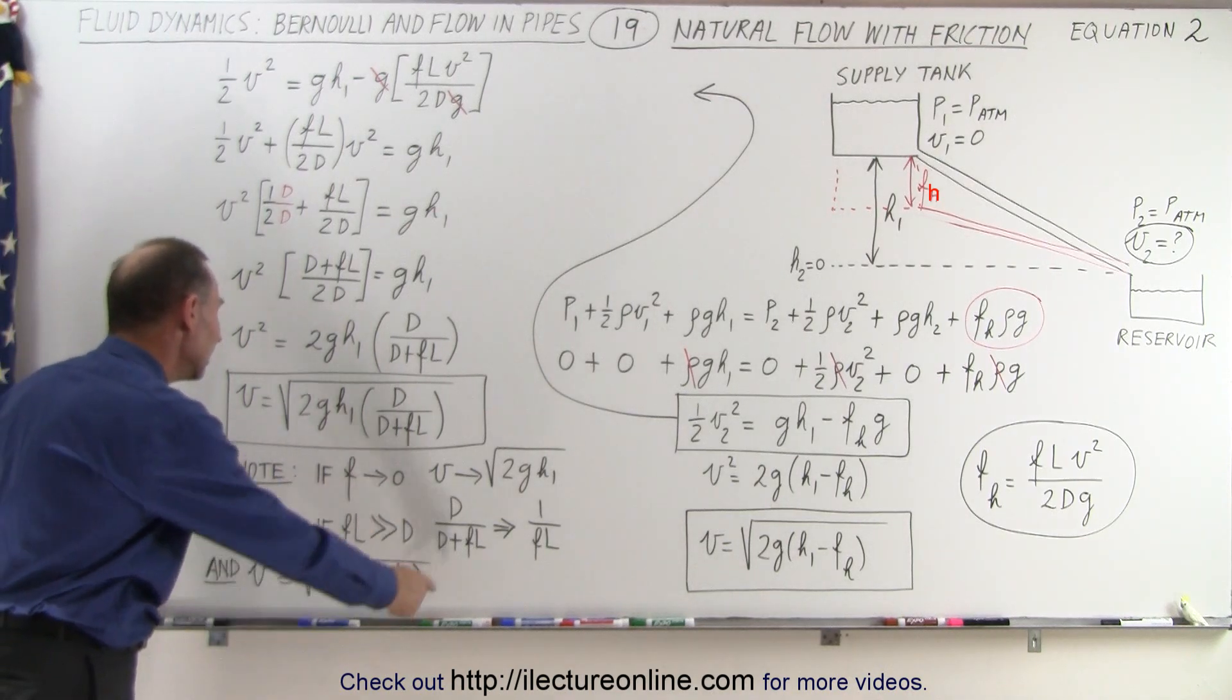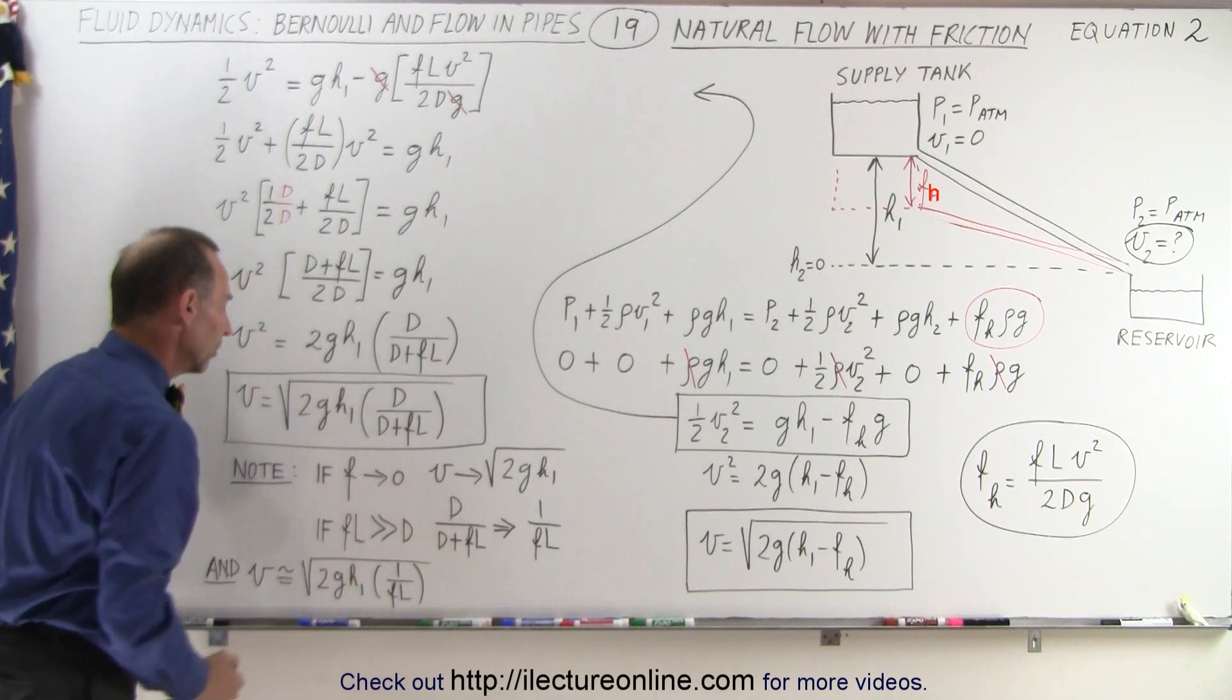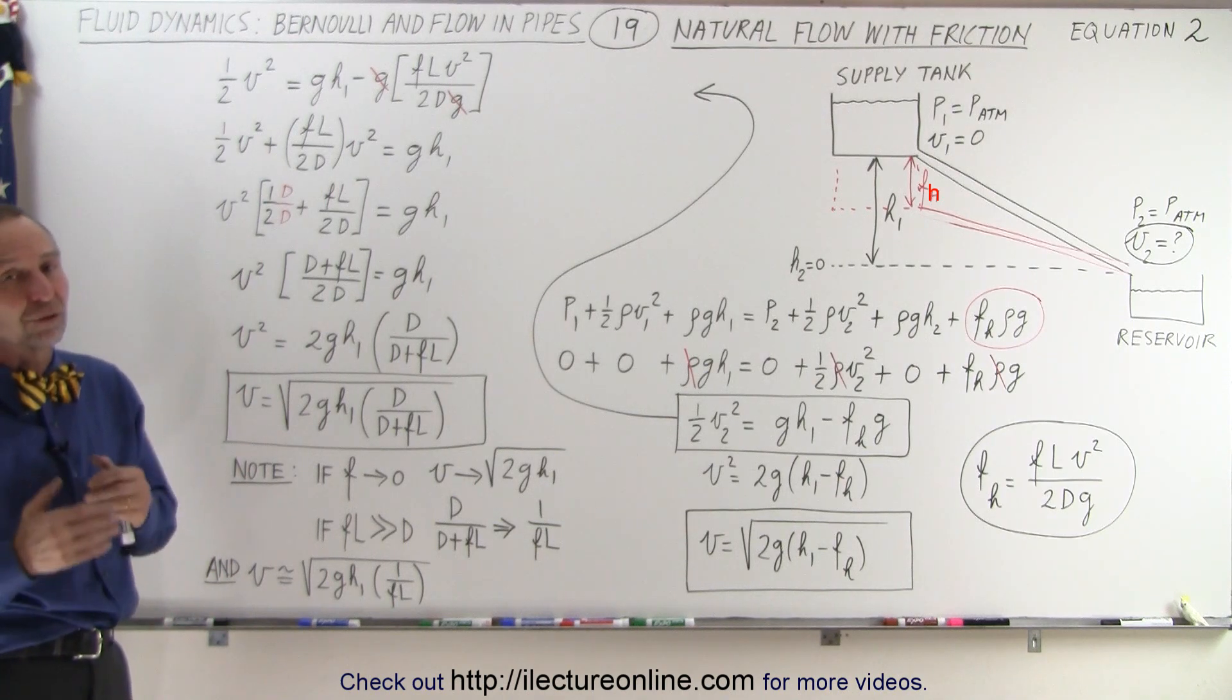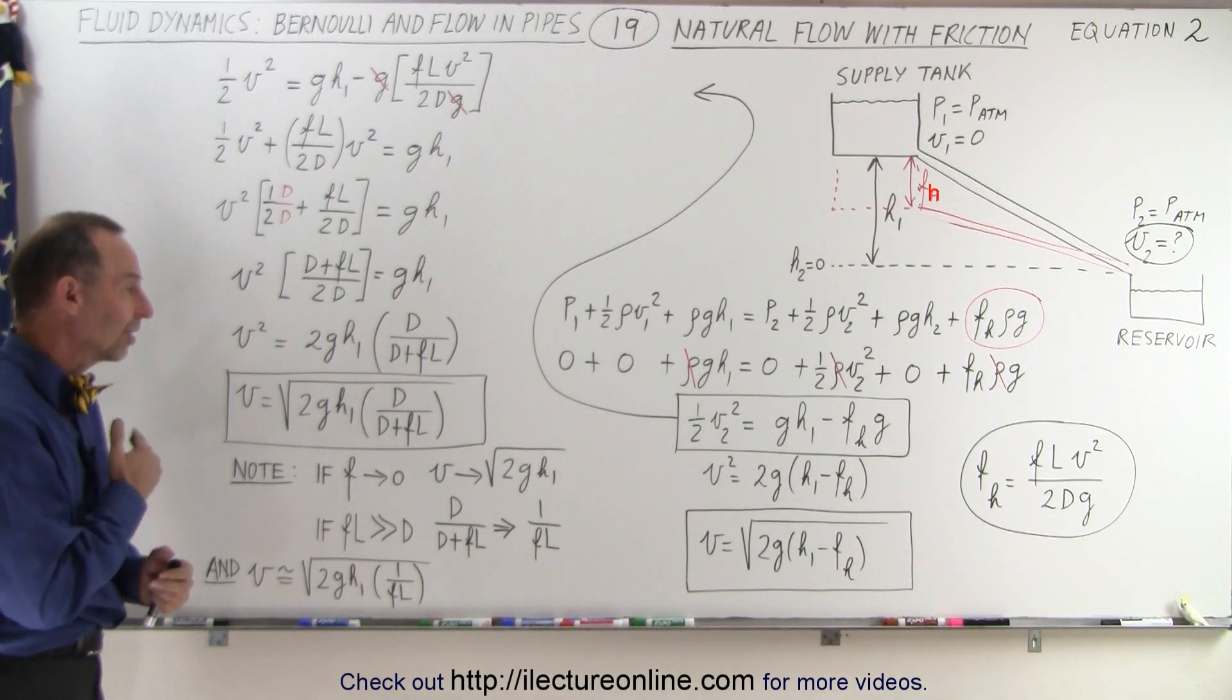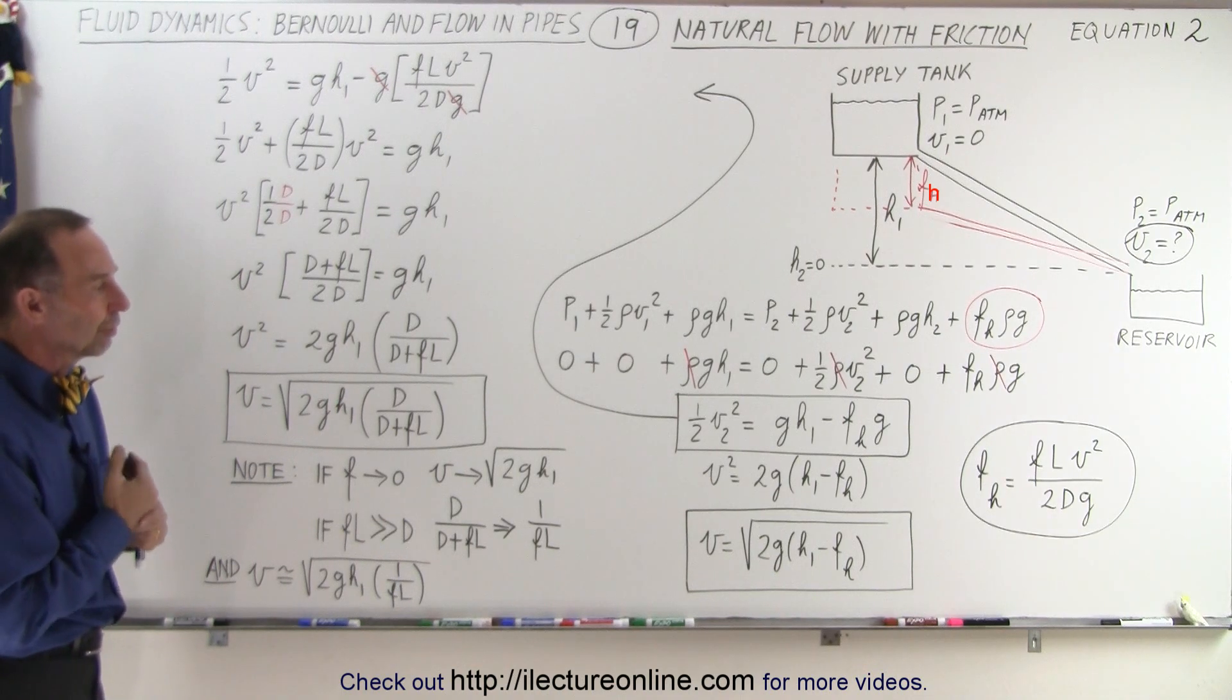So this would then be the limiting case when fl becomes really large relative to the diameter of the pipe, the water simply will begin to flow very, very slowly when it gets to the bottom, but never get to be zero. And that's the significance of this concept when we're trying to figure out the natural flow with friction.